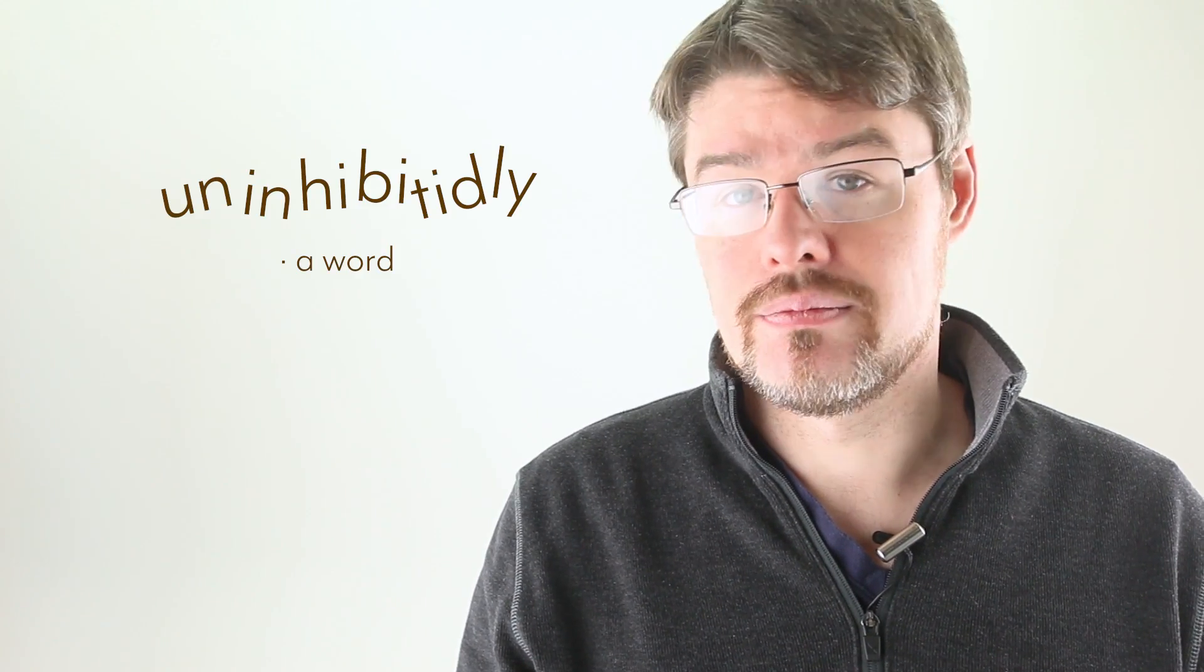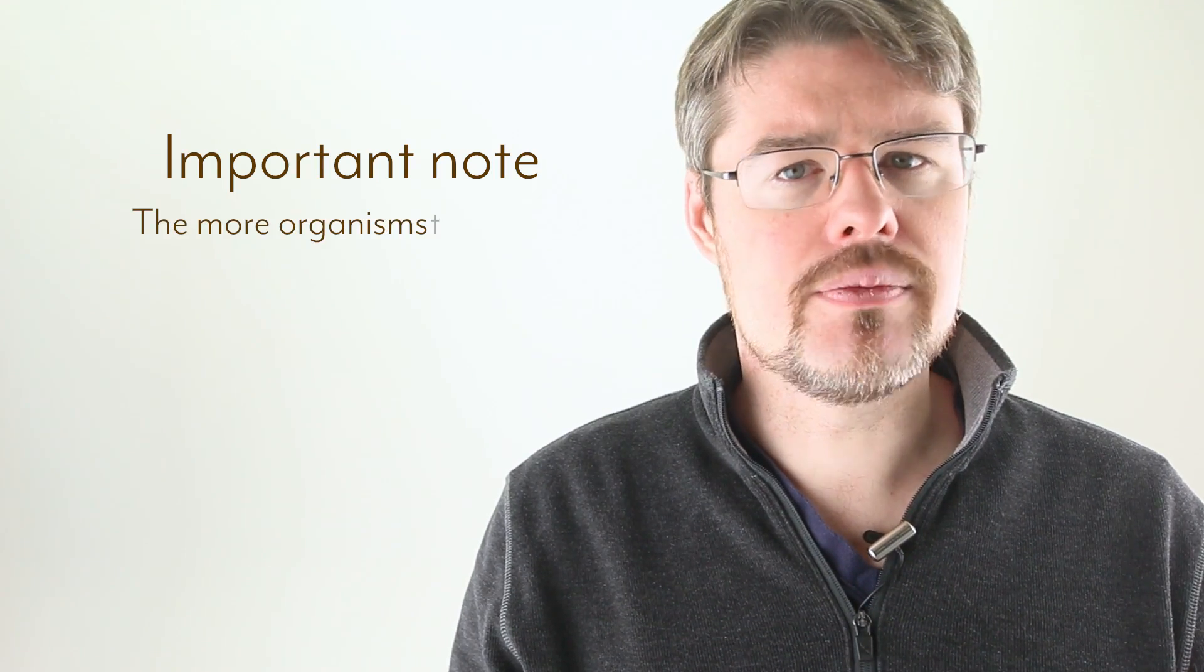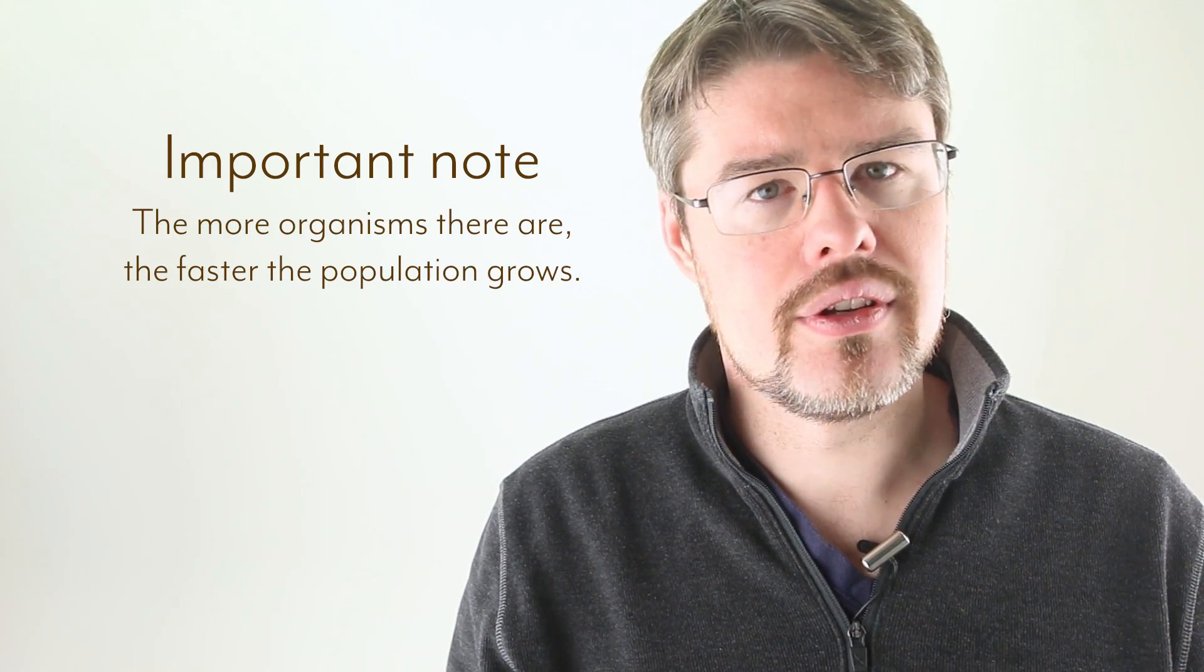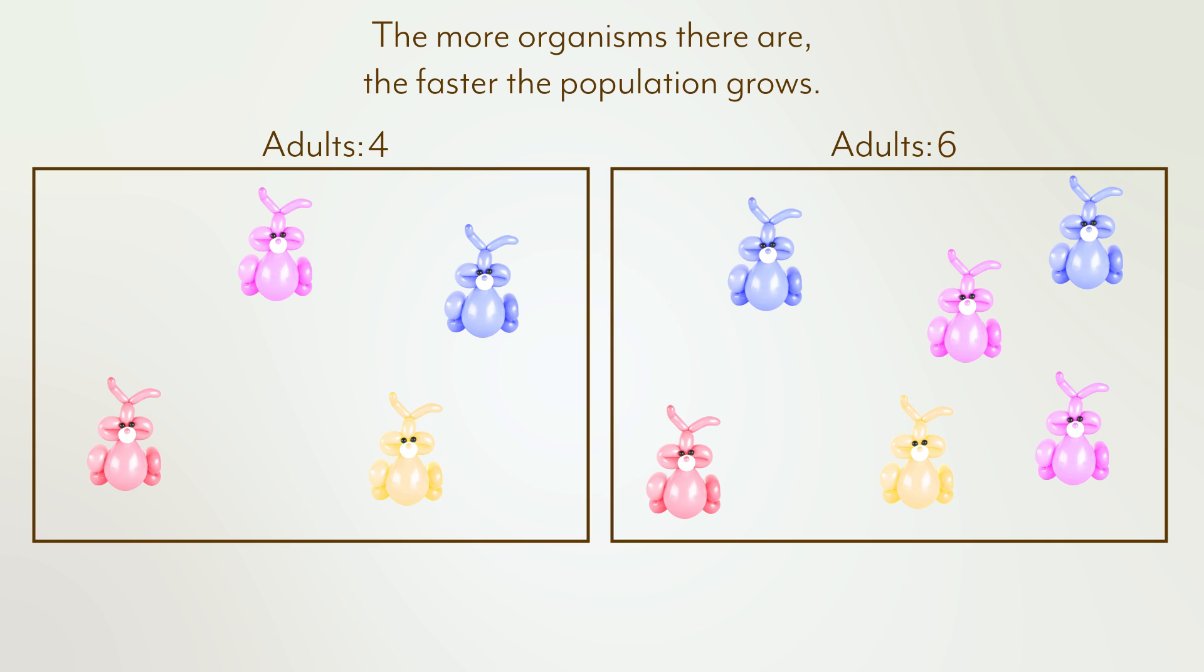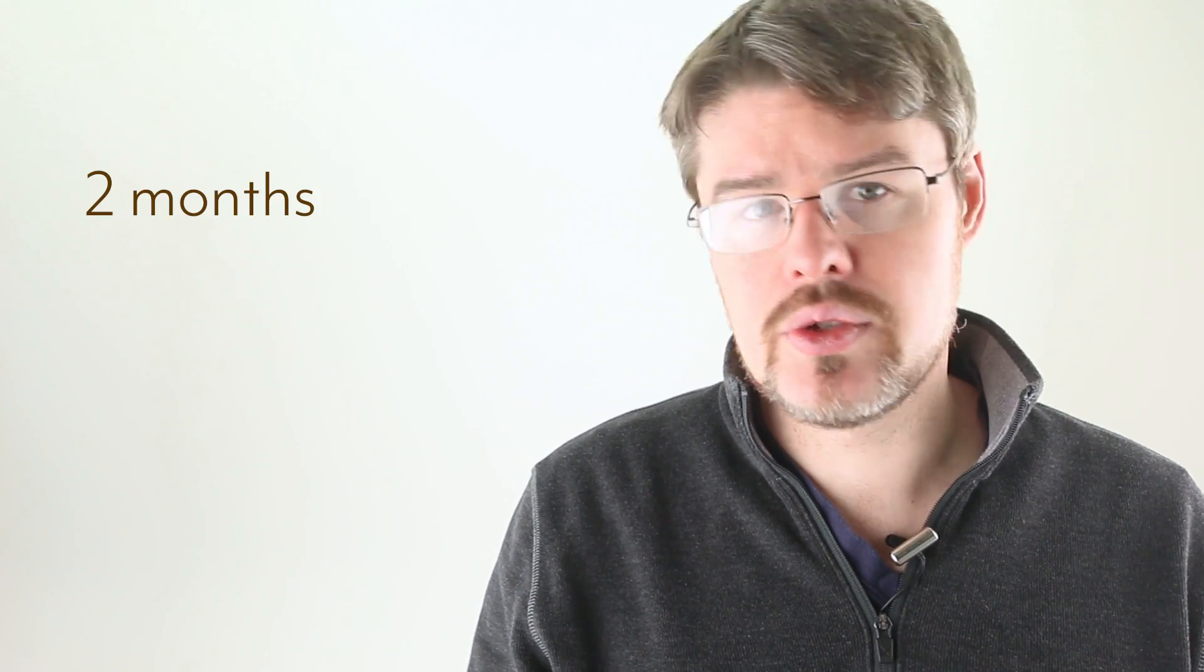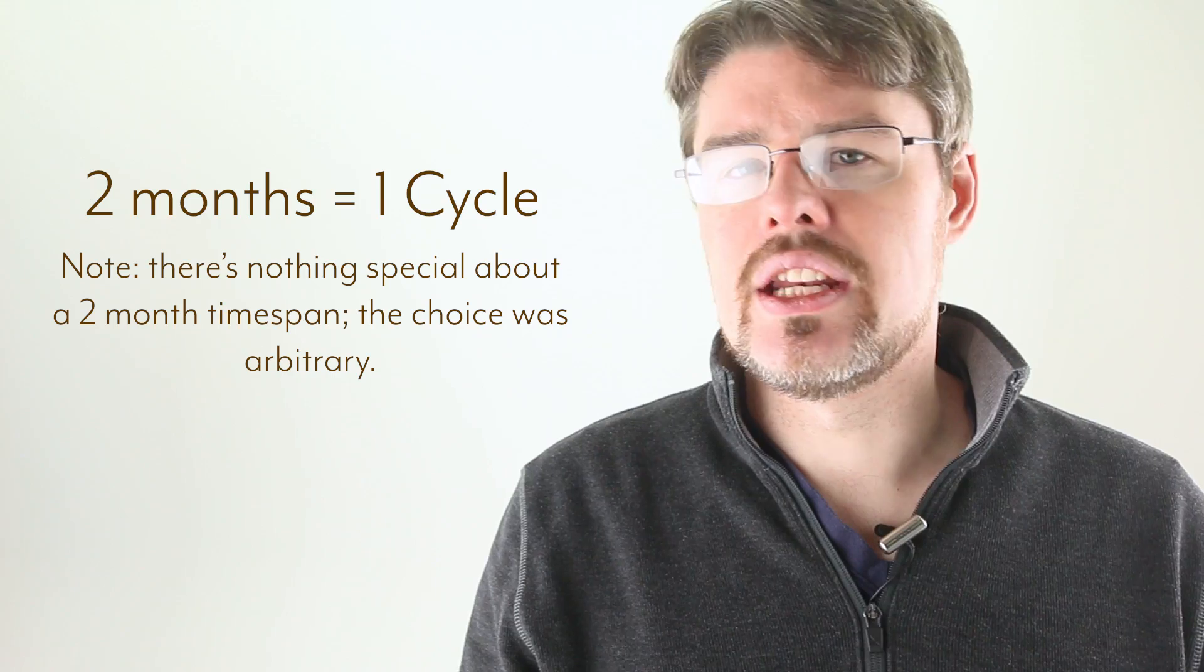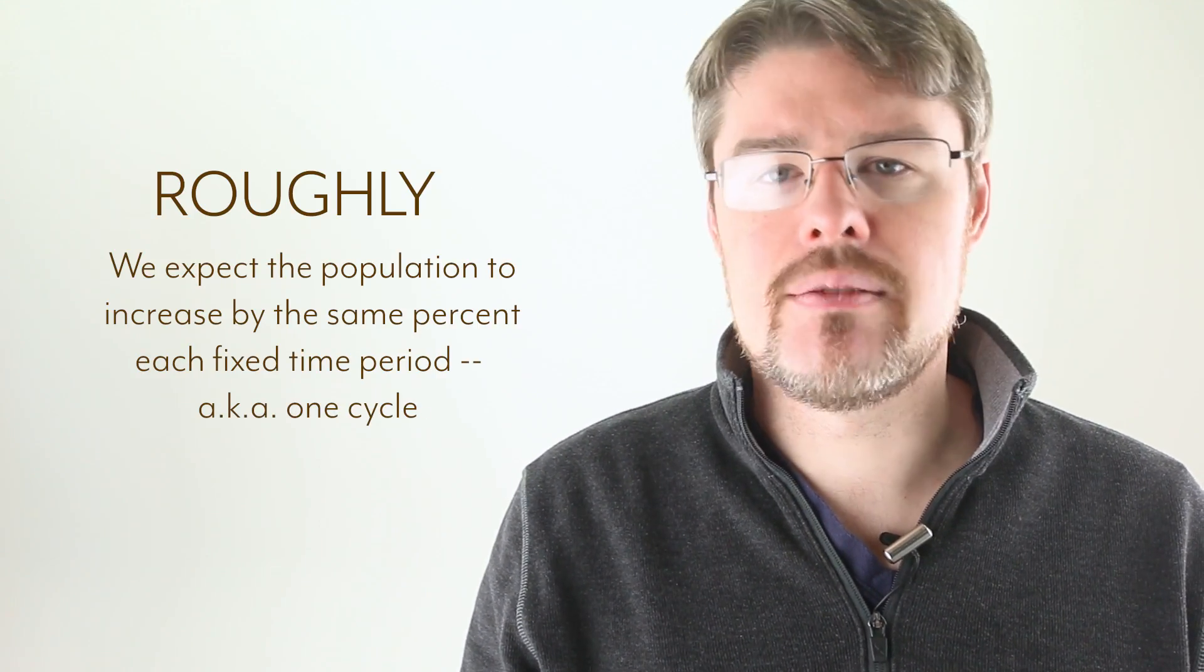To start, let's assume there aren't any diseases, predators, space or food limitations. Essentially, the population can grow uninhibitedly. Which is a word. I want to focus on one particular property the situation has. The more organisms there are, the faster it grows. This makes sense. The more reproducing pairs there are, the more young there will be in the next generation. We could measure the population of rabbits in fixed intervals, say two months, which we'll call a cycle. What we're likely to find using this method is that, roughly, the population increases by the same percent each fixed time period.